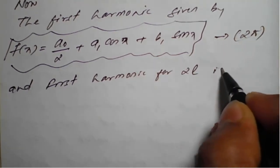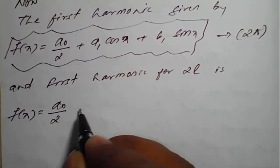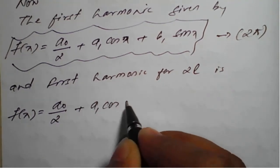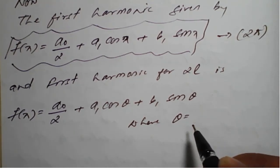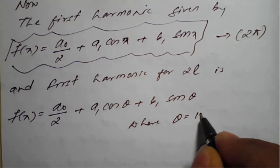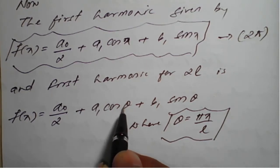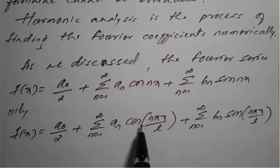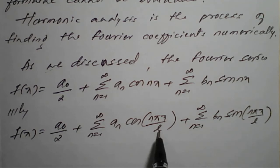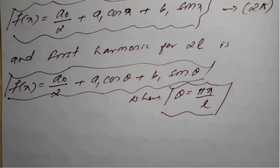The first harmonic for period 2l is: f(x) = a₀/2 + a₁ cos(θ) + b₁ sin(θ), where θ = πx/l. Since n = 1, we write cos(πx/l) in the Fourier series for period 2l. Instead of writing πx/l each time, we use θ as shorthand.